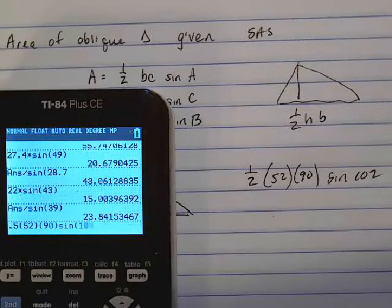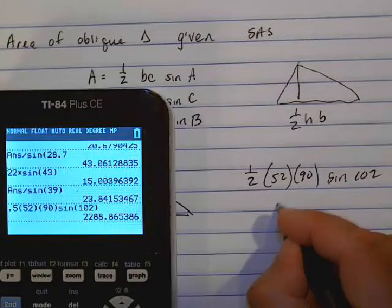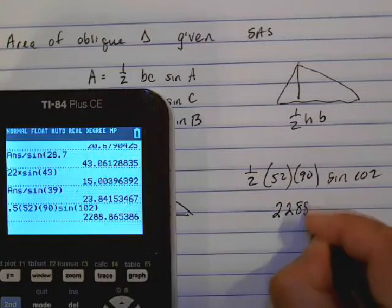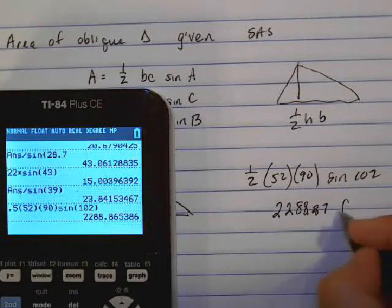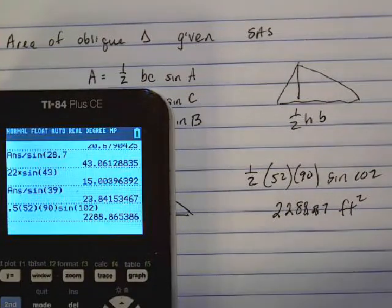So the area of this triangle will be 2288.87 feet squared, or inches squared, whatever the measurement was.